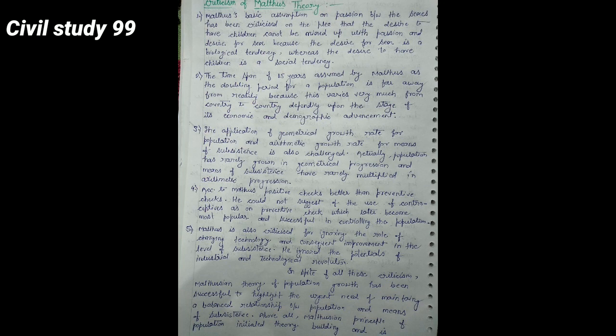Actually, population has rarely grown in geometrical progression and means of subsistence have rarely multiplied in arithmetic progression. Fourth, according to Malthus, positive checks are better than preventive checks. He could not suggest the use of contraceptives as the preventive checks, which later became most popular and successful in controlling the population. Fifth, Malthus is also criticized for ignoring the role of changing technology and consequent improvement in the level of subsistence. He ignored the potential of industrial and technological revolution.